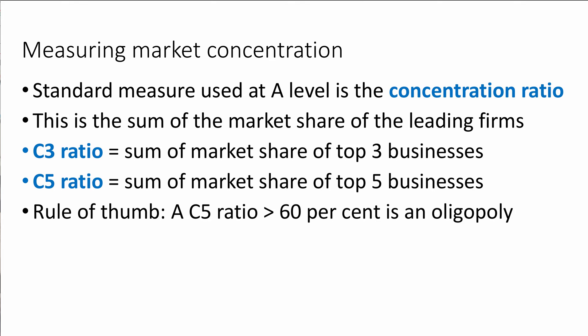The standard measure of market structure is the concentration ratio, often used in data response questions. We take the sum of market share by sales of the leading firms in an industry. The C3 ratio takes the top three businesses; the C5 ratio takes the top five. If the C5 ratio is greater than 60%, the market tends towards an oligopoly — though this is a rule of thumb, not a hard and fast rule.